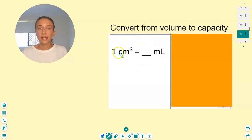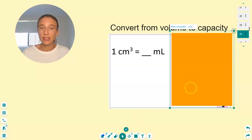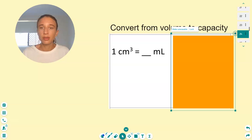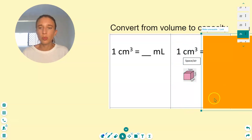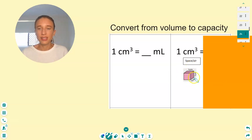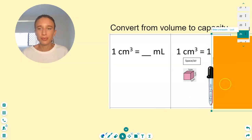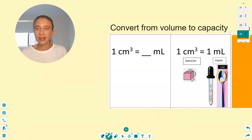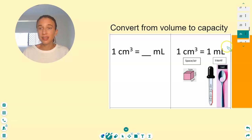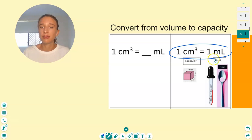This first one is quick to memorize. Picture a little centicube — one centimeter by one centimeter by one centimeter. How many milliliters could be poured into that cube? Only a tiny amount, about a little bit of a teaspoon, which is one milliliter. So one centimeter cubed is equal to one milliliter of liquid. That's our first conversion factor.